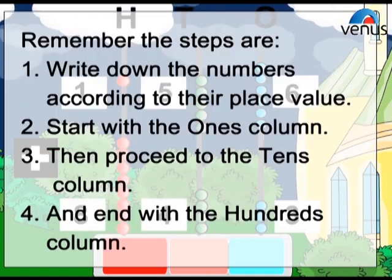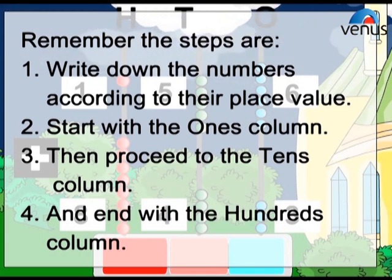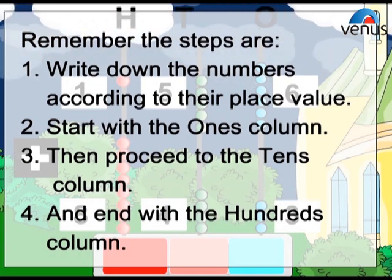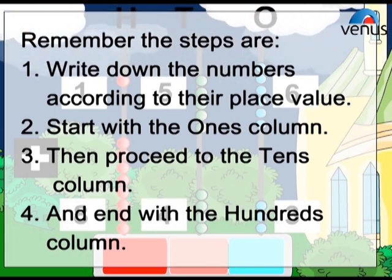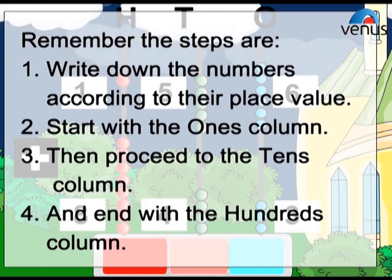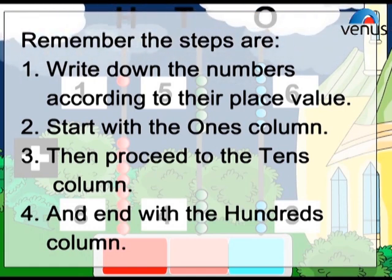Remember the steps are: write down the numbers according to their place value, start with the ones column, then proceed to the tens column, and end with the hundreds column. Example 1: Add 156 plus 843.